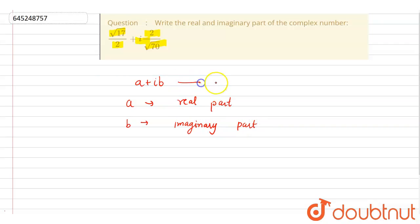Let us say this is equation 1. Now, according to the given question, it is given that √17/2 plus iota 2/√70.